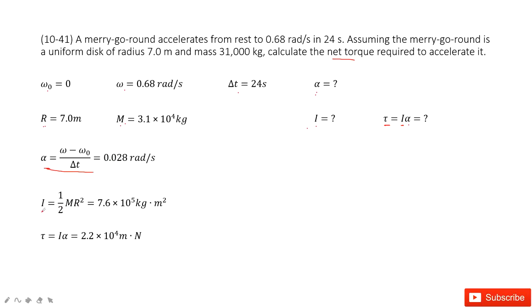And the moment of inertia, I, is one half M R squared. You input M and R inside, you get it. Now you can find the torque very easily, equal to I times alpha. Thank you.